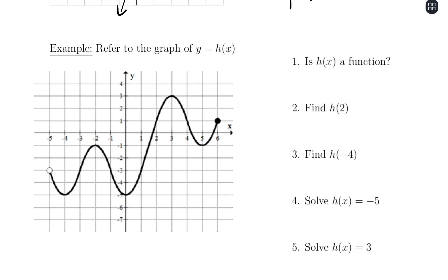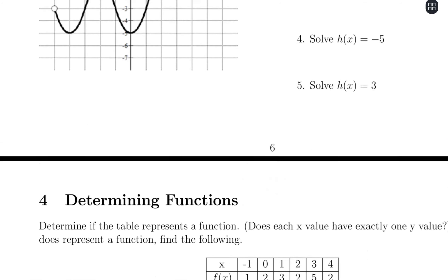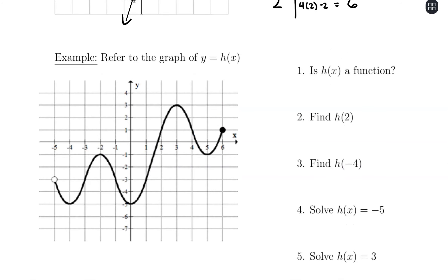We're calling this function h of x, so first we ask: is h of x a function? We need to verify that for every input there's exactly one output. To do that, we use the vertical line test: visualize every possible vertical line, and it should cross the function only once. That guarantees one output per input. This function does pass the vertical line test.